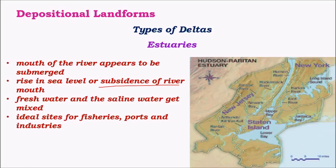Due to varied and diverse animal life, these regions are also biodiversity rich due to the presence of various kinds of birds, especially migratory birds which come here during various seasons. Hence these places are important tourist destinations and also ideal sites for construction of ports and industries, as these sites are less affected by tides and waves, forming ideal harbor locations.